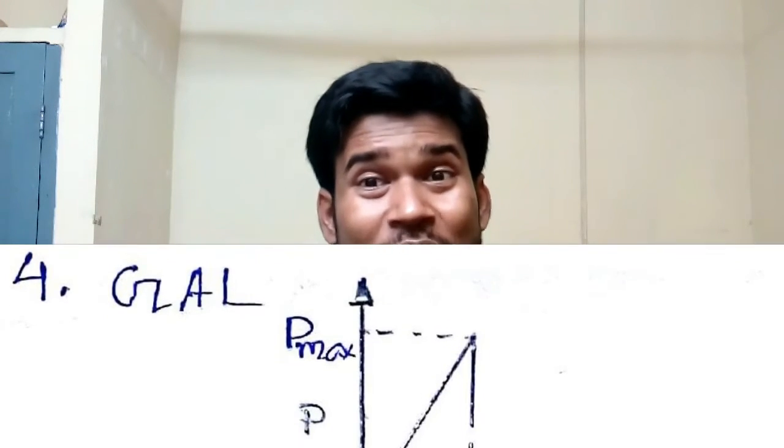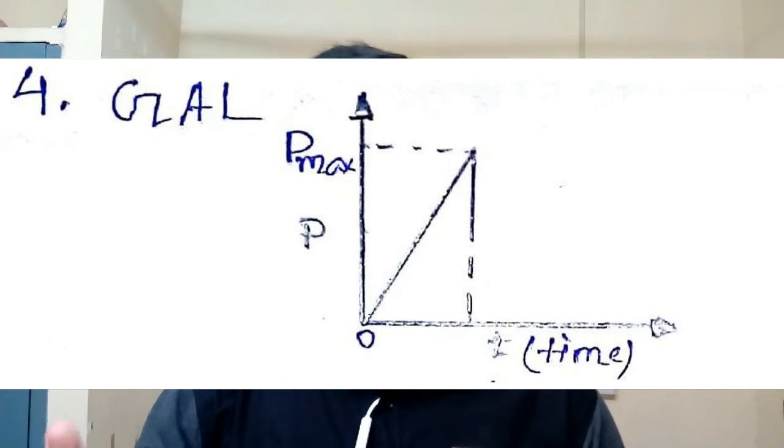Gradually applied load: suppose a person having 70 kg weight is sitting on a chair. The whole load that person has comes onto the chair within one to three seconds. In that condition, the 70 kg load comes on the chair over one to three seconds. The load value is increasing with respect to time — initially when the person is about to sit the load is zero, but at two to three seconds the load becomes maximum. This is called gradually applied load.